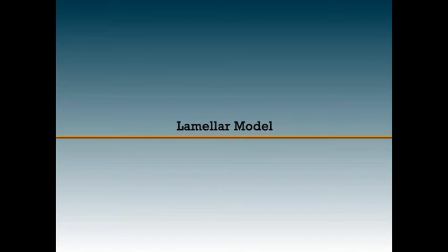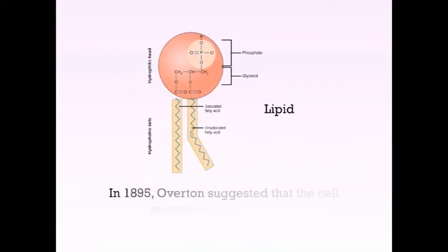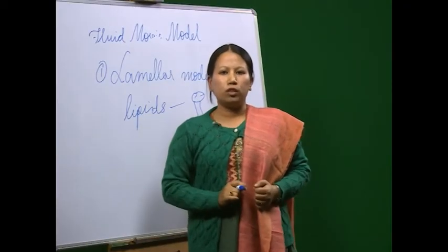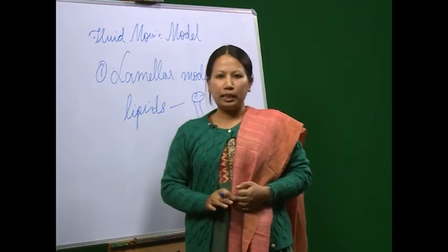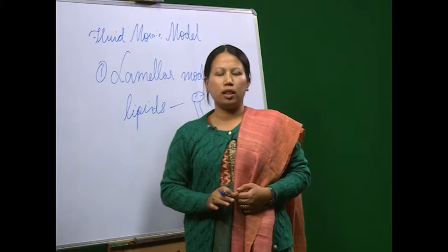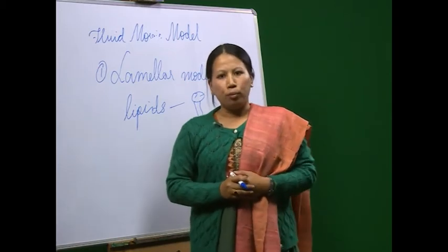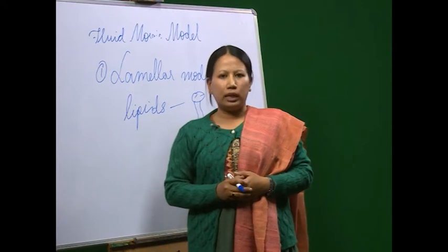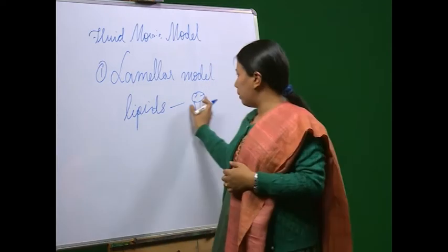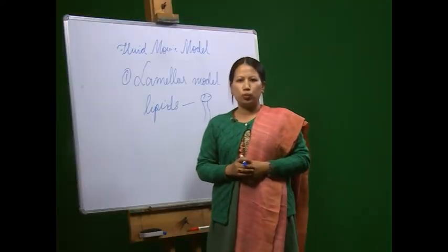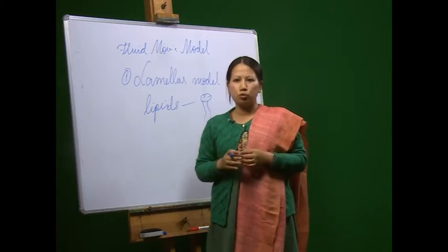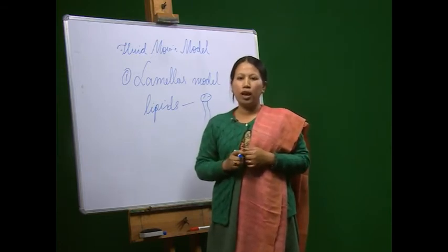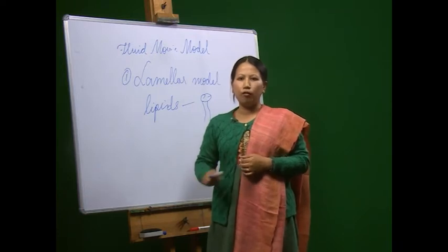Let's see one by one about the various models of membrane structure. First, we'll see the lamellar model. In 1895, Overton suggested that cell membrane contains lipids. This conclusion was based on the fact that fat-solvent dissolves the membrane easily and fat-soluble substances pass easily through the cell membrane. Some workers like Haber in 1910 and Fricke in 1925 also found low electrical conductivity in the cell membranes, indicating the presence of a lipid layer.